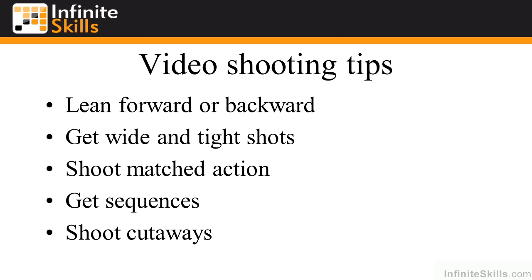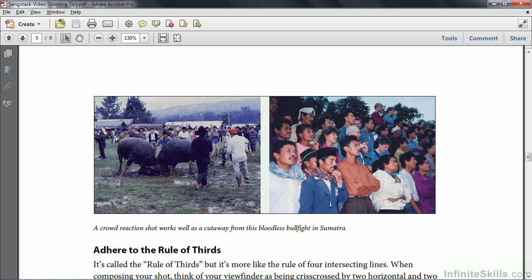Shoot what are called cutaways. If you're shooting an interview and want to use two sound bites back to back on the timeline, that person will probably shift in the chair or look a little different, so you need to cover that with a cutaway — literally something where you're cutting away from the scene for a moment. A cutaway for an interview might be the interviewee's hands or a reverse shot of the interviewer. In the PDF, here's a wide shot of a bullfight in Sumatra. If I want to go from that action to something slightly different, I need a crowd shot as a cutaway — I cut away from the action, go to the crowd, and go back to the action.